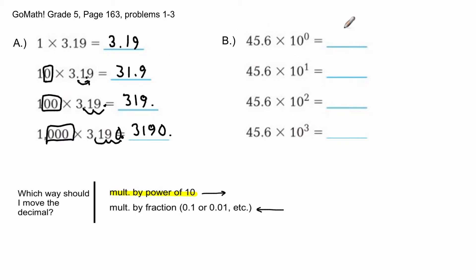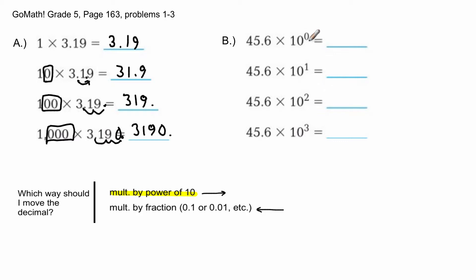Moving on — we have 45.6 being multiplied by 10 to the zero power, 10 to the first, 10 to the second, and 10 to the third power. We can also read these exponents as zero, one, two, and three powers of ten. When multiplying by powers of ten, I'm moving the decimal to the right, and the exponent tells me how many spaces.